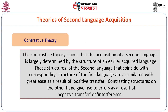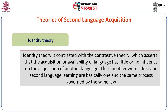Contrastive theory claims that the acquisition of a second language is largely determined by the structure of an earlier acquired language — simply the native language or mother tongue. Those structures of the second language that coincide with corresponding structures of the first language are assimilated with great ease as a result of positive transfer. Contrasting structures, on the other hand, give rise to errors as a result of negative transfer or interference.